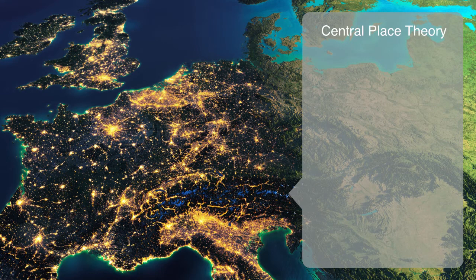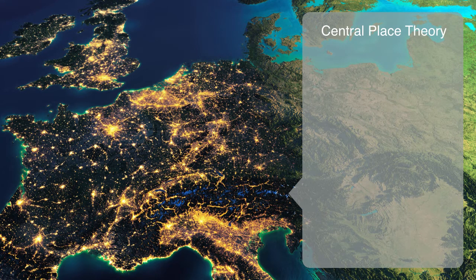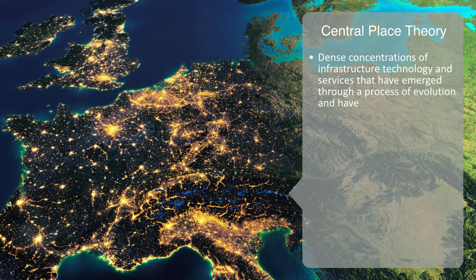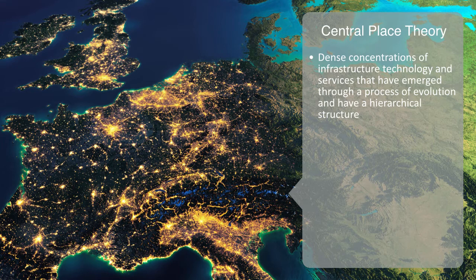This multi-tier hierarchical structure can be seen in the formation of urban centers. From the perspective of technology analysis, urban networks are really the fabric of our engineered environment on the macro scale. They are dense concentrations of integrated infrastructure, technology and services that have emerged over a long process of evolution, and they have a hierarchical structure to them, from villages, to towns, to cities, to metropolitan areas.